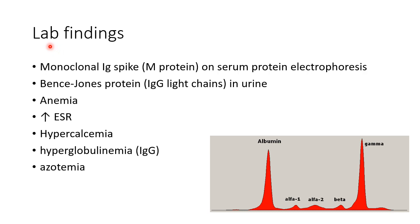Now let us see about the laboratory findings of multiple myeloma. There will be a monoclonal immunoglobulin spike — that is M-protein spike — on serum protein electrophoresis. This picture shows the M-protein spike on serum electrophoresis. There will also be Bence-Jones proteins in urine, which are basically immunoglobulin G light chains.